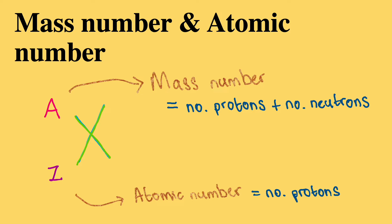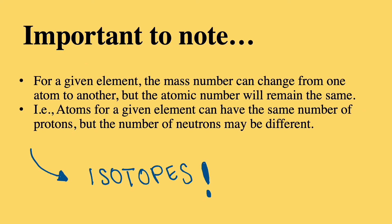Essentially, an element's mass number is simply the addition of its protons and neutrons. It's important to note that for a given element, the mass number can change from one atom to another, while the atomic number will remain the same.